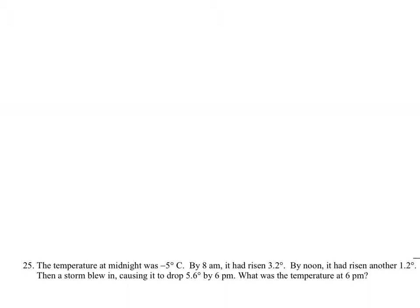The temperature at midnight was negative 5 degrees Celsius. By 8 a.m. it had risen 3.2 degrees. By noon it had risen another 1.2 degrees. Then a storm blew in, causing it to drop 5.6 degrees by 6 p.m. What was the temperature at 6 p.m.? Well, let's go and take a look.